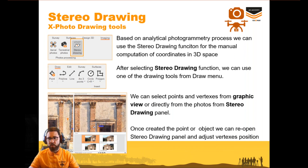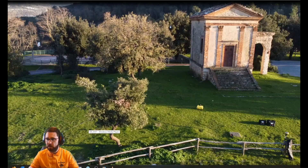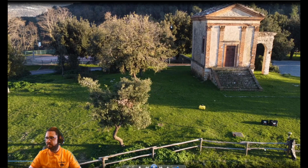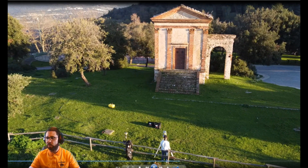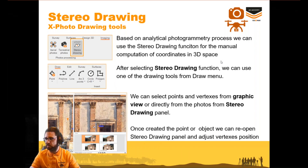The stereo drawing tool is available in both modules — we will see directly how to use it in the main software interface. For this webinar, we are in a small area near Rome — a small 17th-century temple. We performed terrestrial photogrammetry for the facade, used TPS to measure some points, and integrated this data with GNSS measurements and a BLK laser scanner. For the webinar we will focus on the facade, though all the data has already been integrated to combine the different modules.